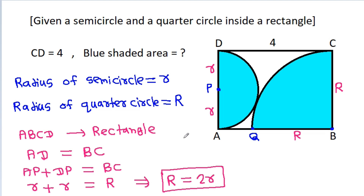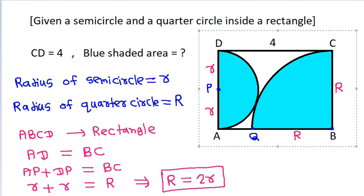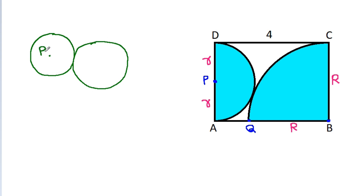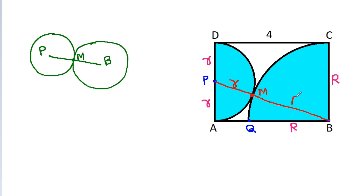In two touching circles, with centers P and B, if we join the centers of both circles, the line will pass through the common point of contact — suppose M. So if we join PB, it will pass through the common point of contact M, where PM equals small r and BM equals capital R.